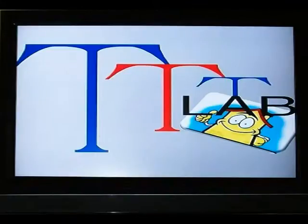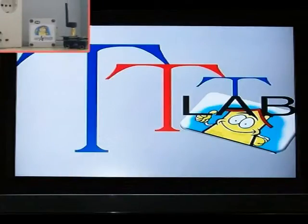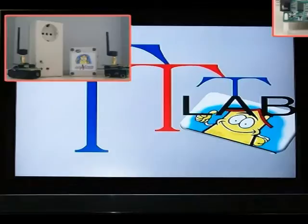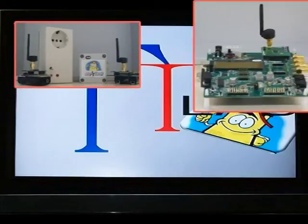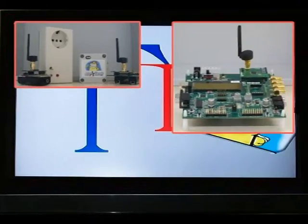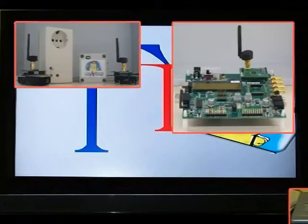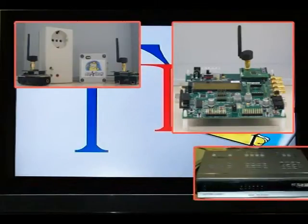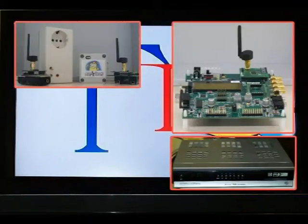The CASA TENTA application is based on a wireless sensor network. The network coordinator communicates with a set-top box for digital terrestrial television. The user can display the data, control the sensors, and interact with the application using the set-top box remote control.